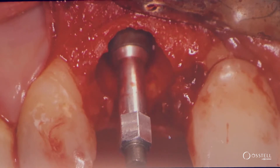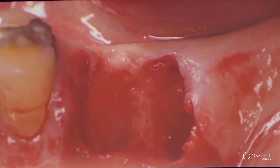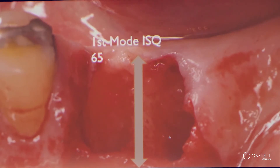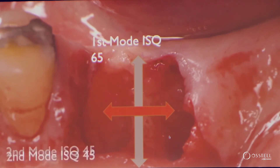We can be the best clinicians in the world, and insertion torque can give us an idea, but we can't really predict the stability of that implant at the time of placement — and it is important to know. For example, looking at this molar extraction site, we're looking to place an implant in the septum. If we measure the ISQs, the first mode is 65, but the second mode is much less — it's 45.